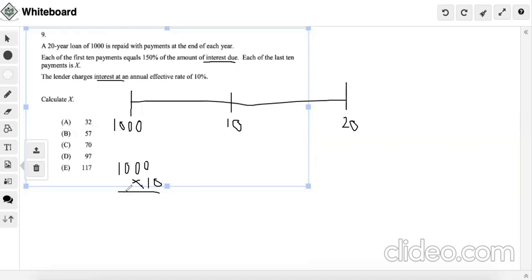Then, take our calculators and we find out that we get 100. So now, once we get 100, it says that each of the first 10 payments equals 150% of the amount of interest due. So that means we do 100 times 150%.